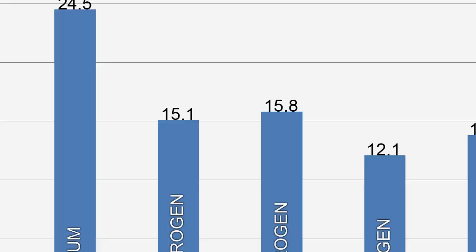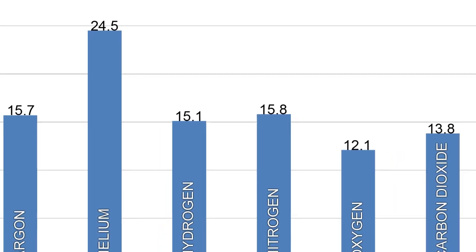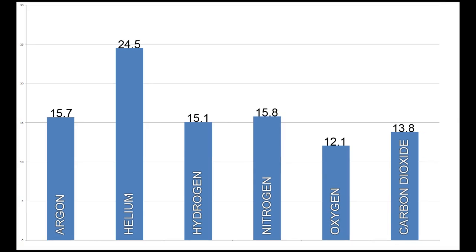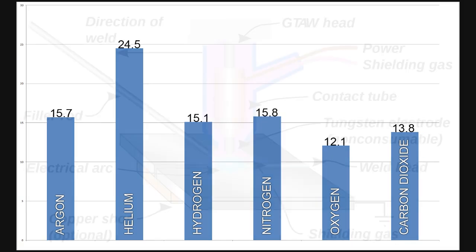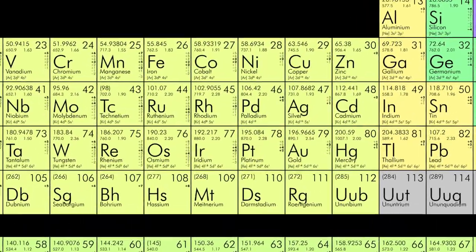There is a minimum voltage at which electricity will flow in the gas. This voltage is called the ionization potential — the potential measured in volts at which the current will conduct between the electrode and workpiece through the gas. The voltage in the circuit must be above this potential to maintain the welding arc. When choosing the gas, it's important to consider the ionization potential.